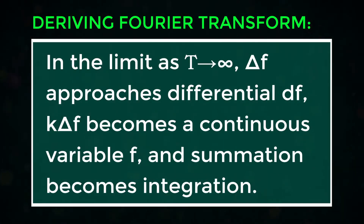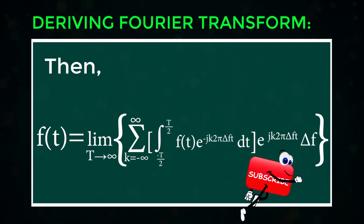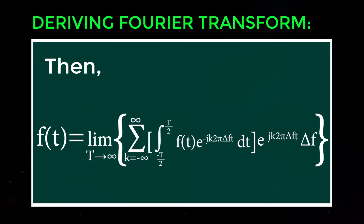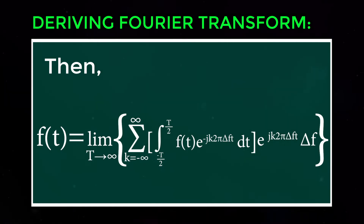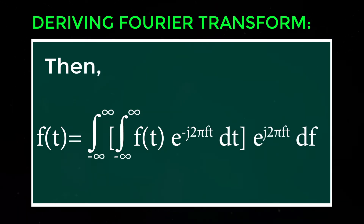In the limit as T → ∞, Δf becomes a continuous variable f and the summation becomes integration. Then f(t) = lim(T→∞) of Σ (k = -∞ to ∞) of ∫ (-T/2 to T/2) of f(t) · exp(-j·k·2π·Δf·t) dt · exp(j·k·2π·Δf·t) · Δf.